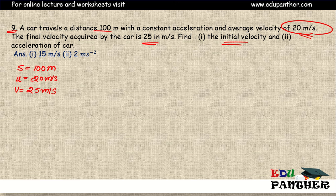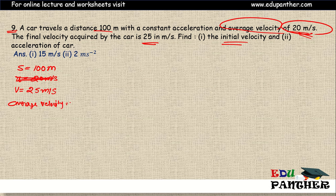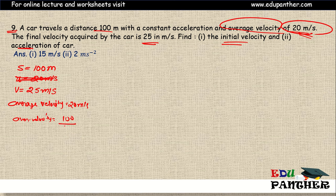The 20 meters per second is the average velocity. Average velocity means total distance divided by time, so that is 20 meters per second. Now average velocity formula is total displacement upon time. Displacement is 100 meters but time we have to find out. So 20 equals 100 divided by t, therefore t equals 5 seconds.